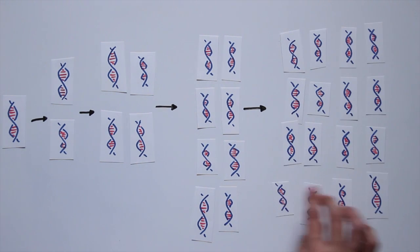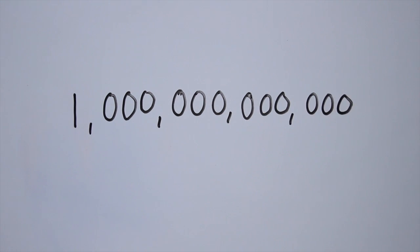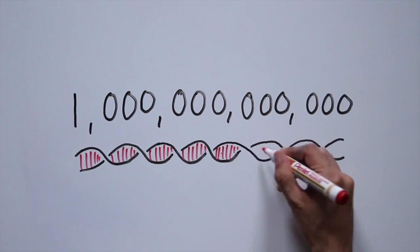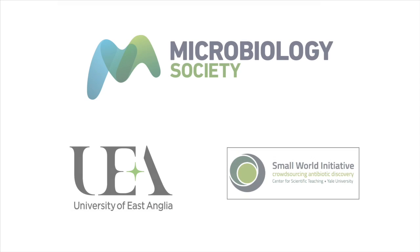We run this reaction for 40 cycles, which gives us over a trillion pieces of DNA, so you can see just how much DNA we need before we can analyse it.